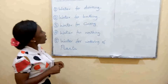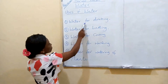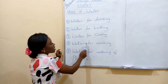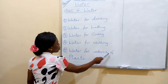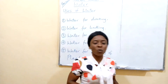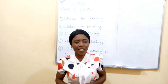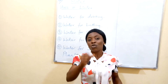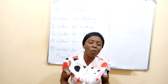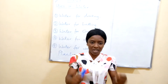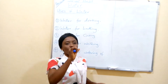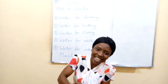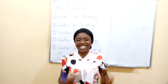Alright, beautiful children. So we go into our lesson. We say we use water for drinking, water for bathing, water for cooking, water for washing, and water for watering of plants. Mommy uses water to cook for you. Mommy uses water to bake for you. When you are thirsty, what do you do? You drink water.